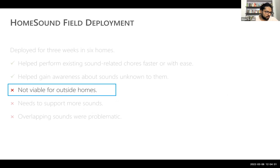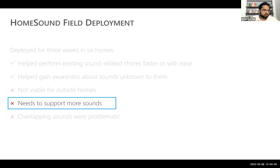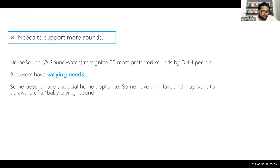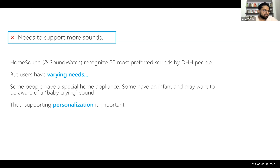The second concern was that the home sound system — or even SoundWatch — does not support enough sounds. The system only recognizes the top 20 most preferred sounds by deaf people. But deaf and hard-of-hearing users could have different needs depending on their hearing levels or personal situations. Some may have a special home appliance they want recognized, or some may have an infant — and baby crying, while not in the top 20, is highly important for certain people. So we want the system to support personalization.